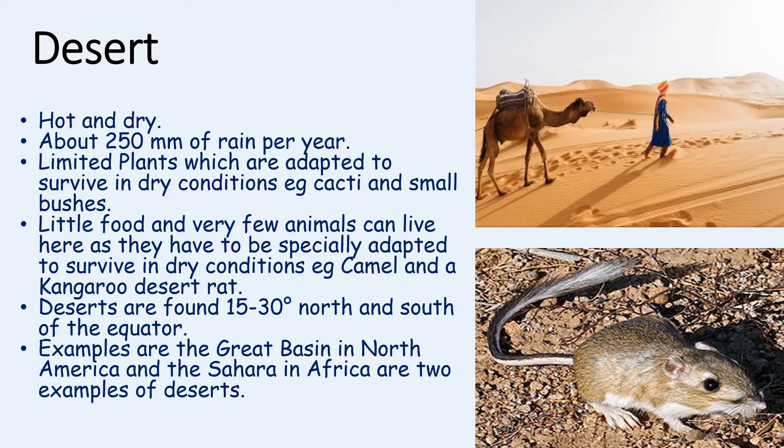As there are not many plants, there is not much food for animals to eat and so very few animals can survive the harsh conditions of the desert — examples include snakes, reptiles, hawks, camels and the kangaroo desert rat. Deserts are found between 15 to 30 degrees north and south of the equator, and two examples are the Great Basin in North America and the Sahara in Africa.